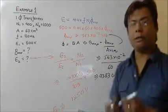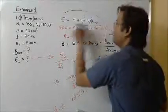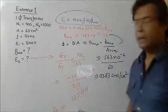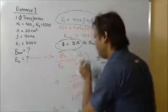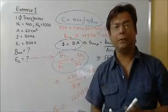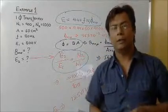So this is how we have used two formulas. This is the first formula which we have used, this is the second formula we have used, and this is the third formula we have used to find Bmax and E2 in the example.